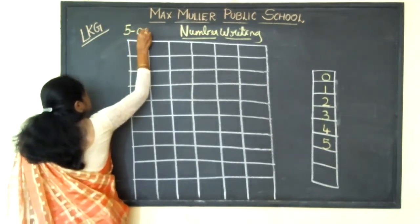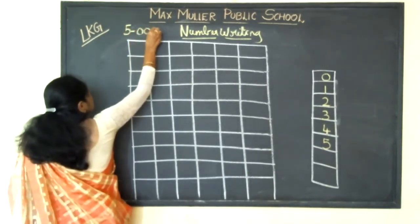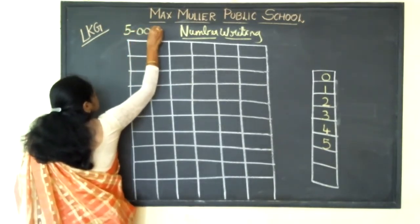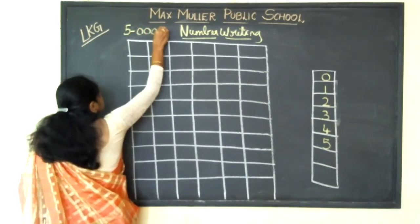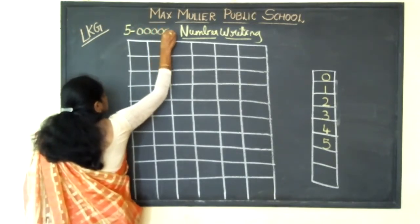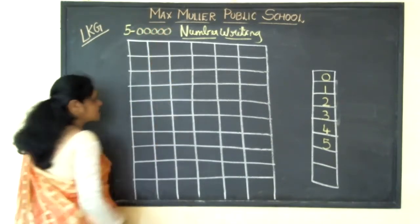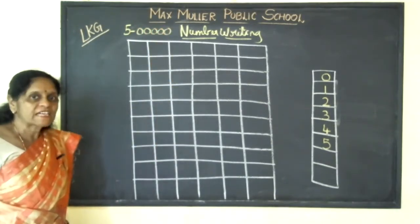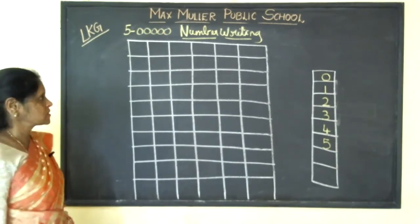One circle, two circles, three circles, four circles, five circles. Five circles. What? Five circles.